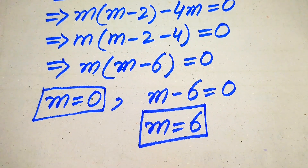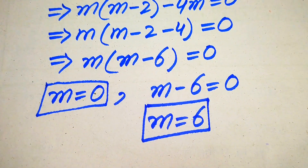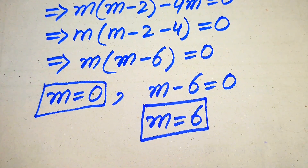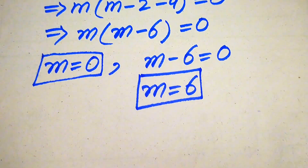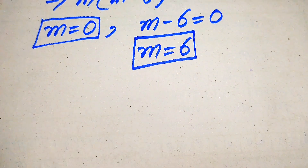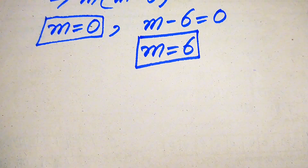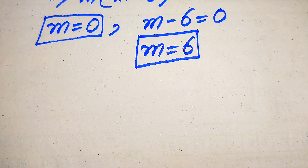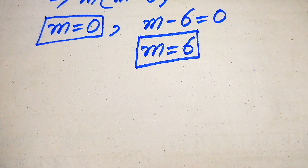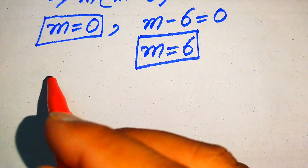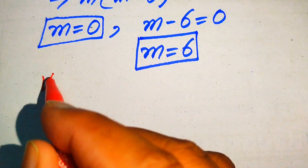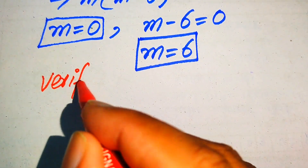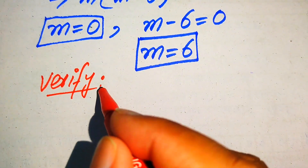If your question is only to find all the roots, you can use the first method. In the first method we find all the roots, while in the second method we find only the non-trivial roots. In the next steps we verify which of the roots are solutions and which are extraneous roots.